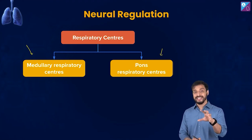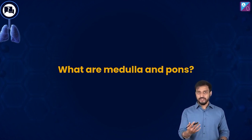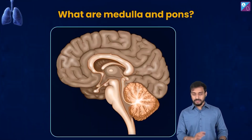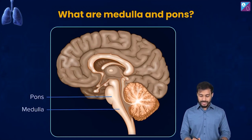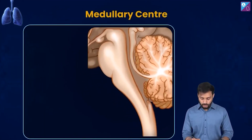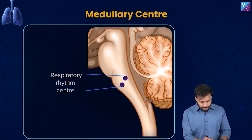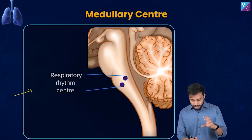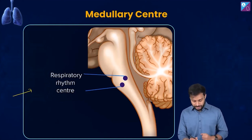I'll be a bit slow here so that you grasp the regulation. The medulla and pons will be studied in detail in upcoming chapters on the brain, but here's a quick glimpse. You can see the brain — this portion is the pons, and this is the medulla. Now let me zoom in to show the regulatory centers and their locations.